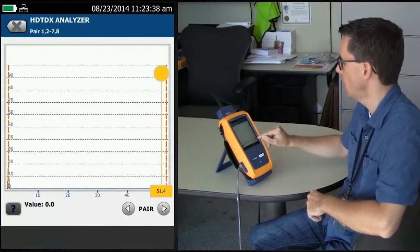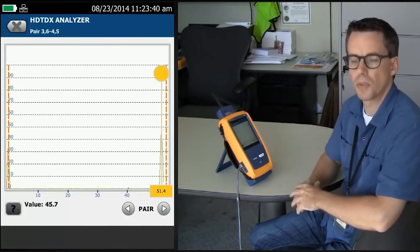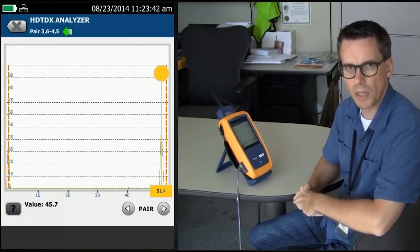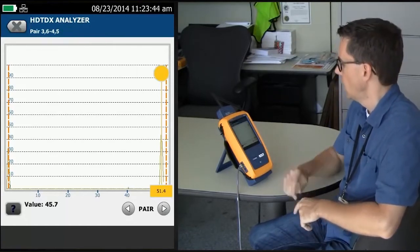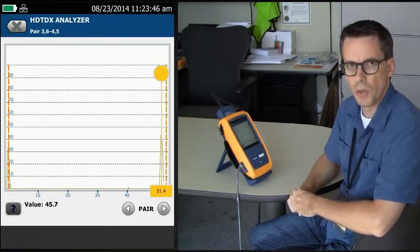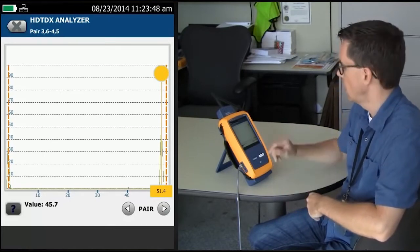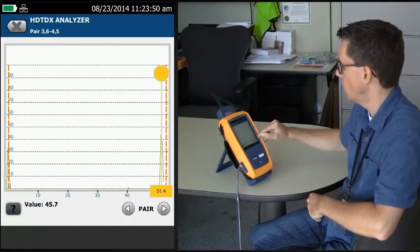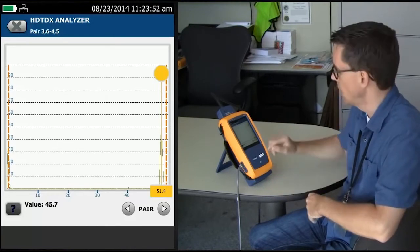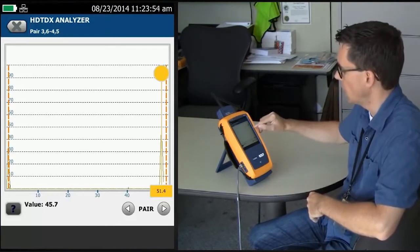I'm going to go, using that pair arrow, so I get 3-6, 4-5 appear in the top left-hand corner there. The cursor will automatically go to the largest source of crosstalk, and it's gone to around about 51.4 meters, 168 feet. This is the far end connection here.